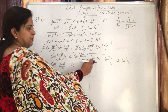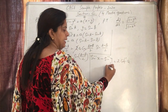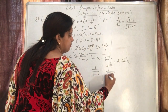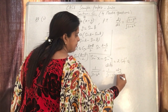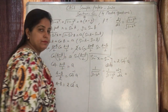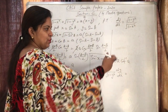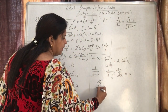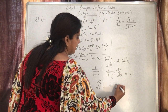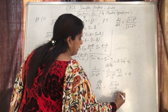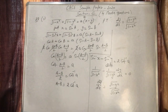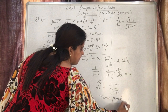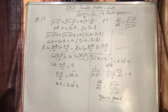Now we differentiate both sides. The derivative of sin⁻¹(x) is 1/√(1-x²), and the derivative of sin⁻¹(y) is 1/√(1-y²)·(dy/dx). The right-hand side 2·cot⁻¹(a) is a constant, so its derivative is zero. Isolating dy/dx, we get dy/dx = √(1-y²)/√(1-x²). Hence proved.